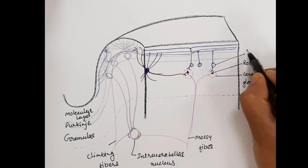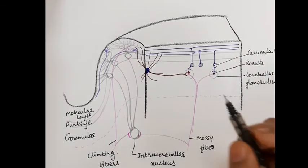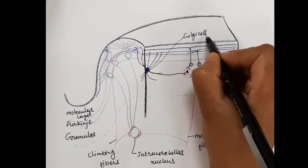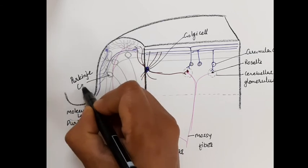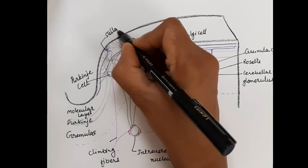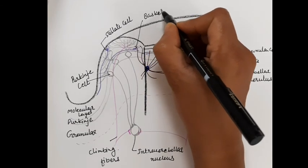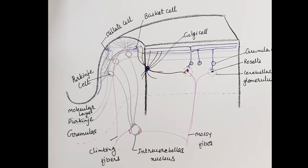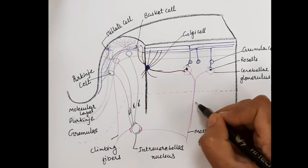The parallel fibers of the granular cells excite the inhibitory responses of the Purkinje cells, stellate cells, basket cells, and Golgi cells. The climbing fiber receives afferents from the inferior olivary nucleus, while all other fibers arrive as mossy fibers.